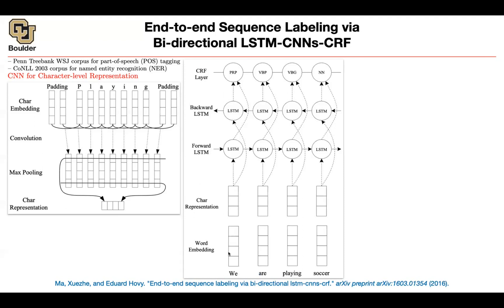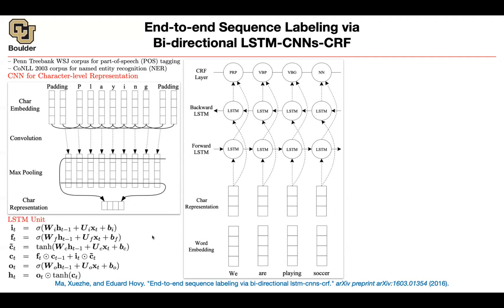You have your word embedding and your character representation. You concatenate them and push them through a forward and backward LSTM. You can concatenate again and put the last layer of your neural network, which gives you as many classes as you want — for instance, this is a verb, this is a noun — and you're doing part-of-speech tagging.